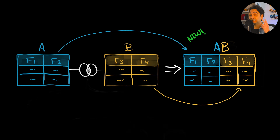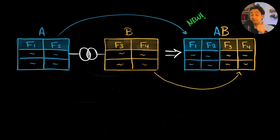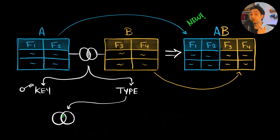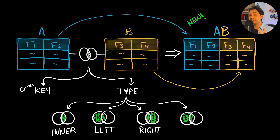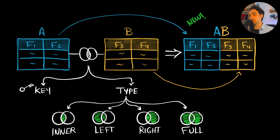To do a join we need two things: first, a key field — a field that exists in both tables. After that, we have to define the type of join. We choose between four types: inner join, left join, right join, and full join. If you know SQL, it's exactly the same logic, but let's go through quick examples to understand all four types.